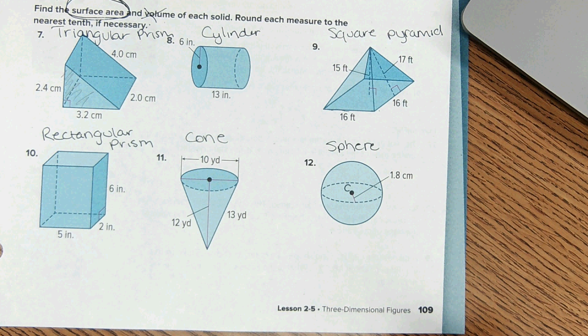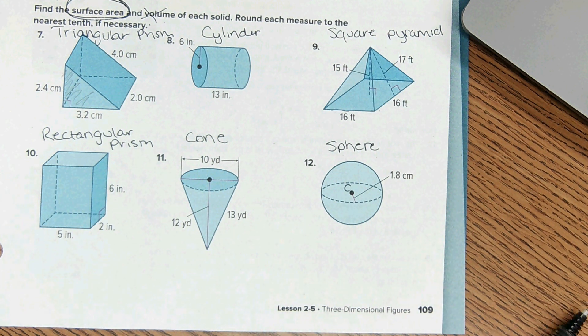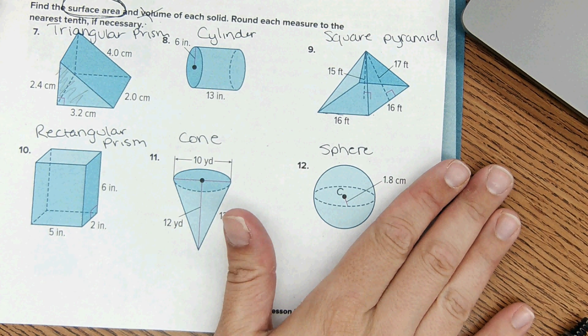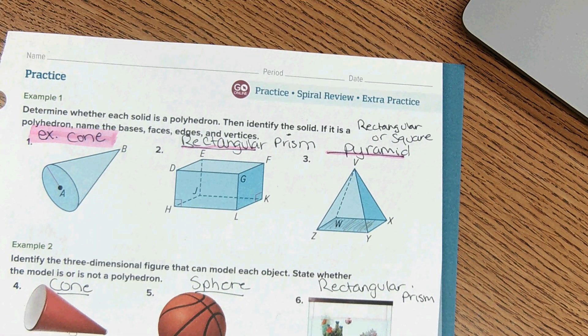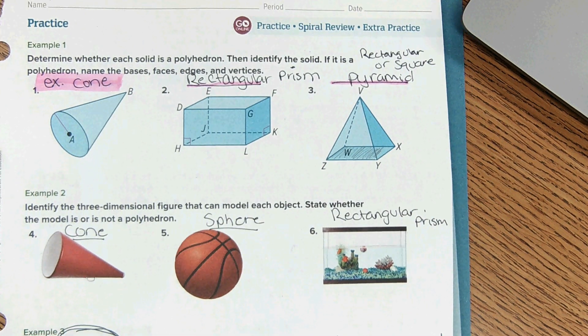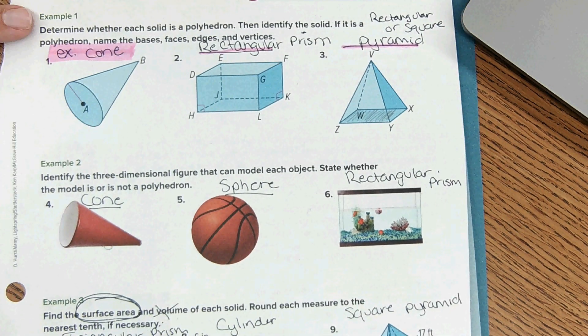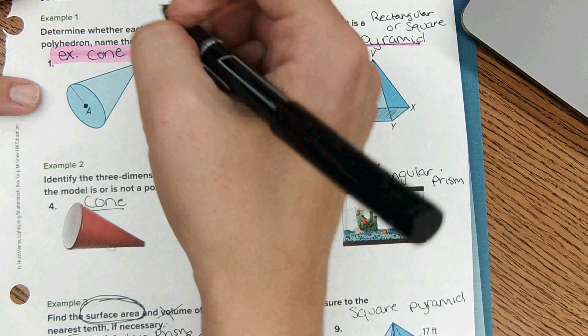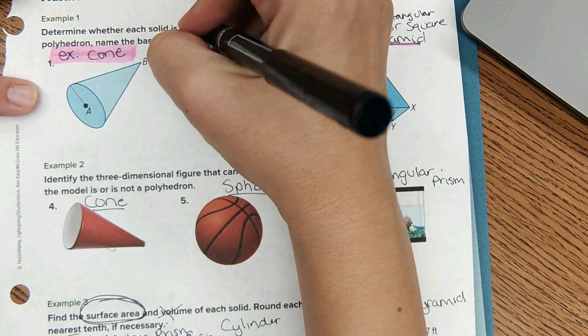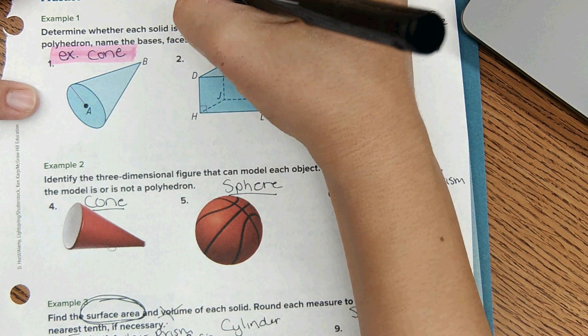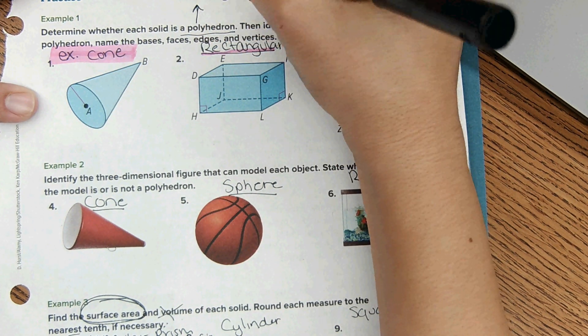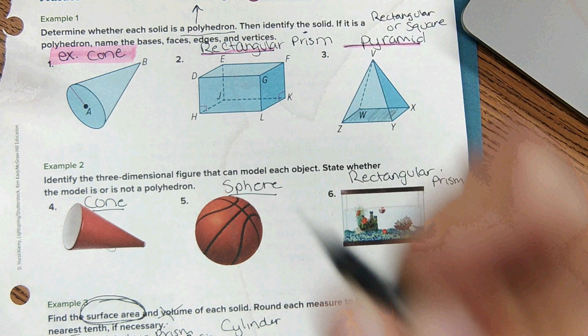So half the battle is being able to name the shapes, because once you can name them then you can find the equations on the reference sheet. Starting up here, some of this is review. We're focusing on surface area, but while this is here we'll just quickly review some of these topics. It says determine whether each solid is a polyhedron. Polyhedron means that all sides are polygons, and polygons have straight sides.